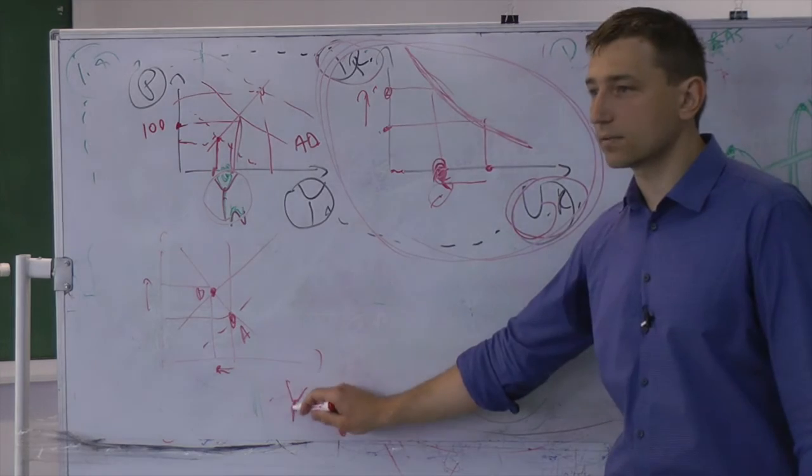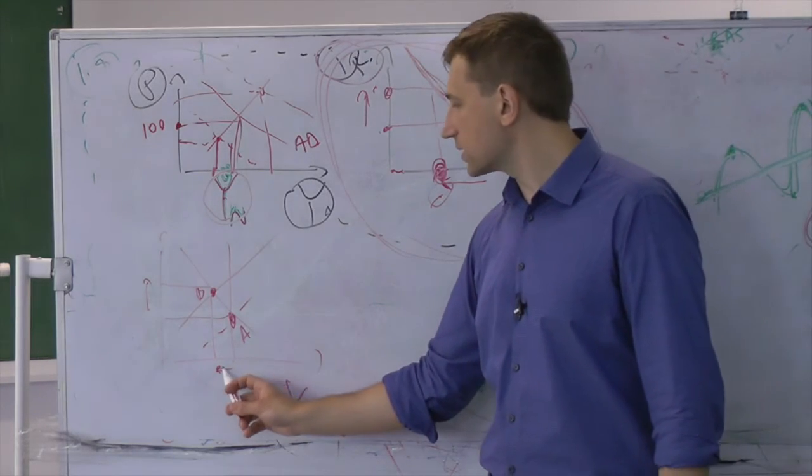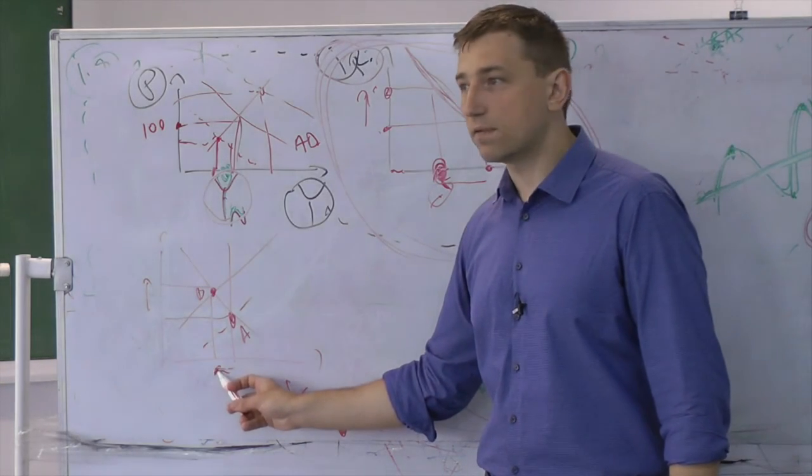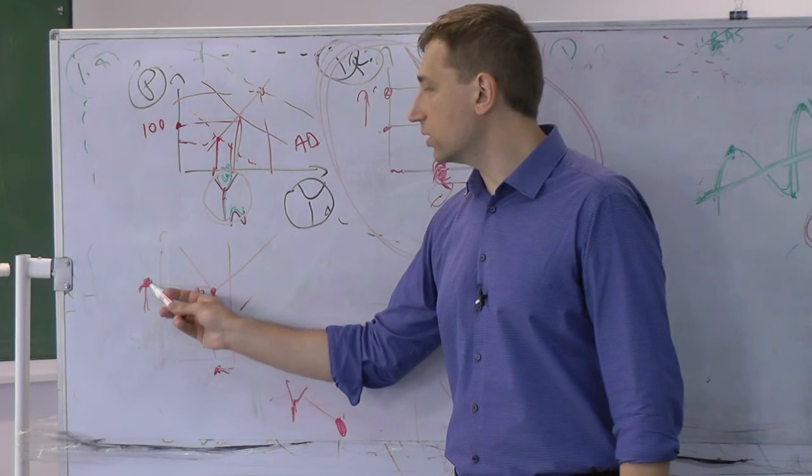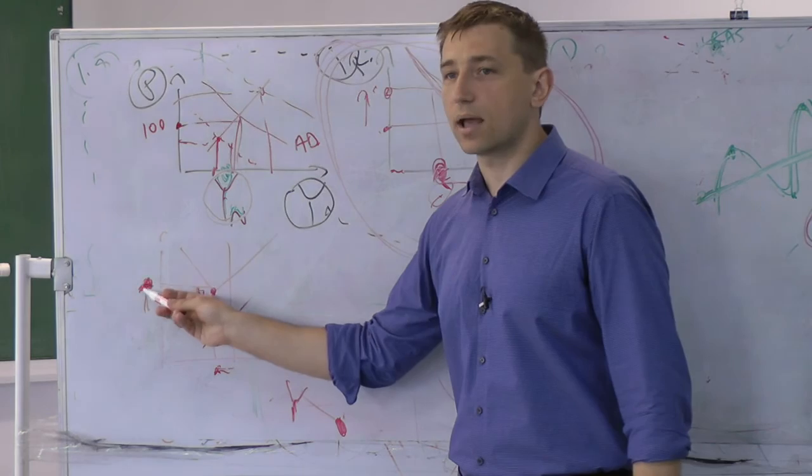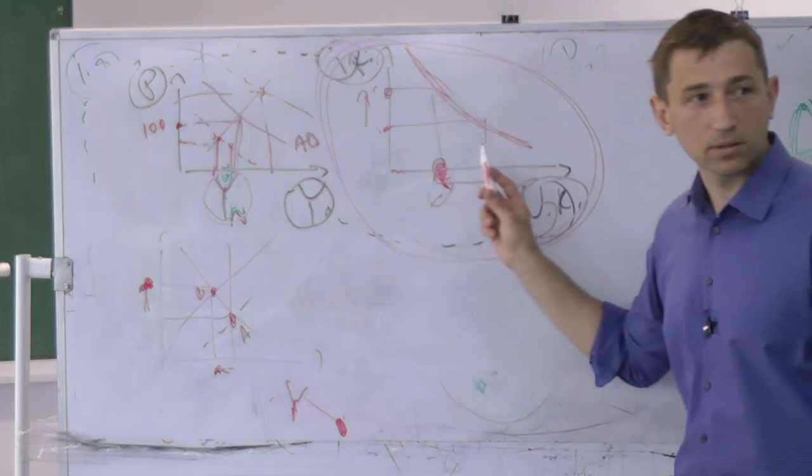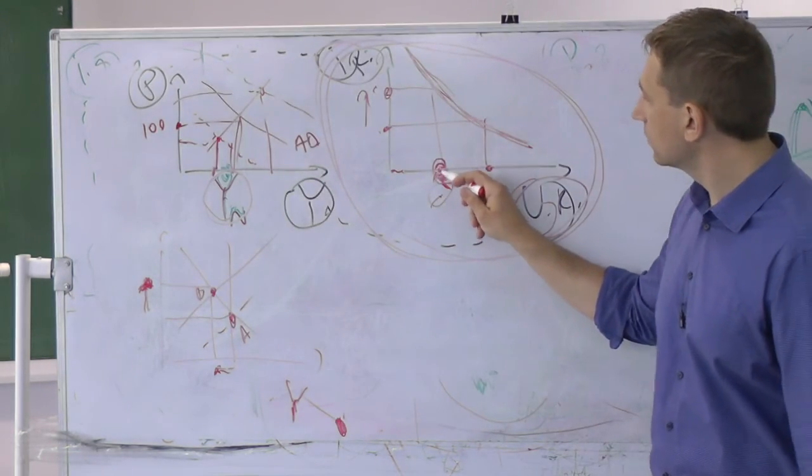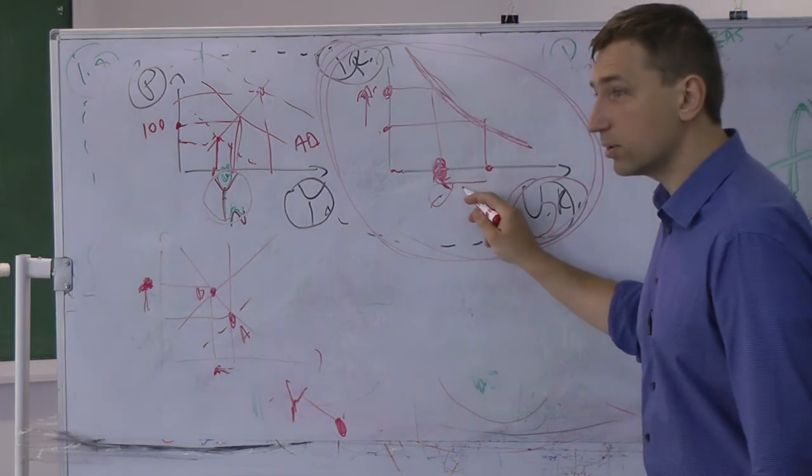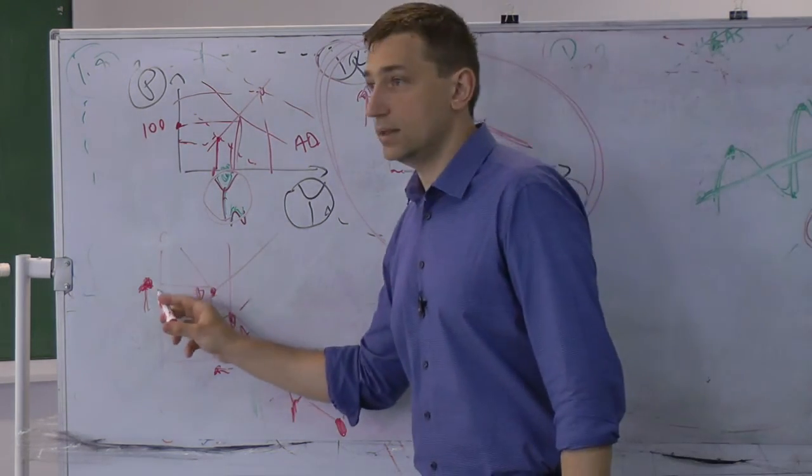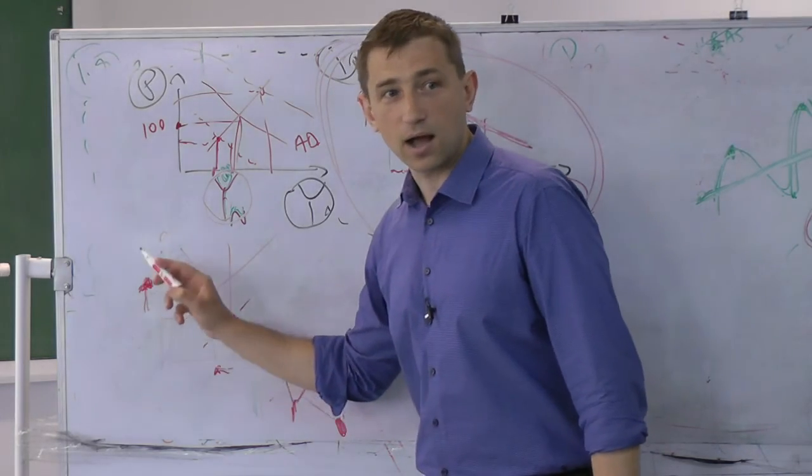You have high unemployment. Make sure you understand this is why. This is the output. Output is lower. So you have high unemployment and high inflation, which doesn't look like the desired outcome. You want it to be here, high inflation, low unemployment. But you wake up here, high inflation, high unemployment.